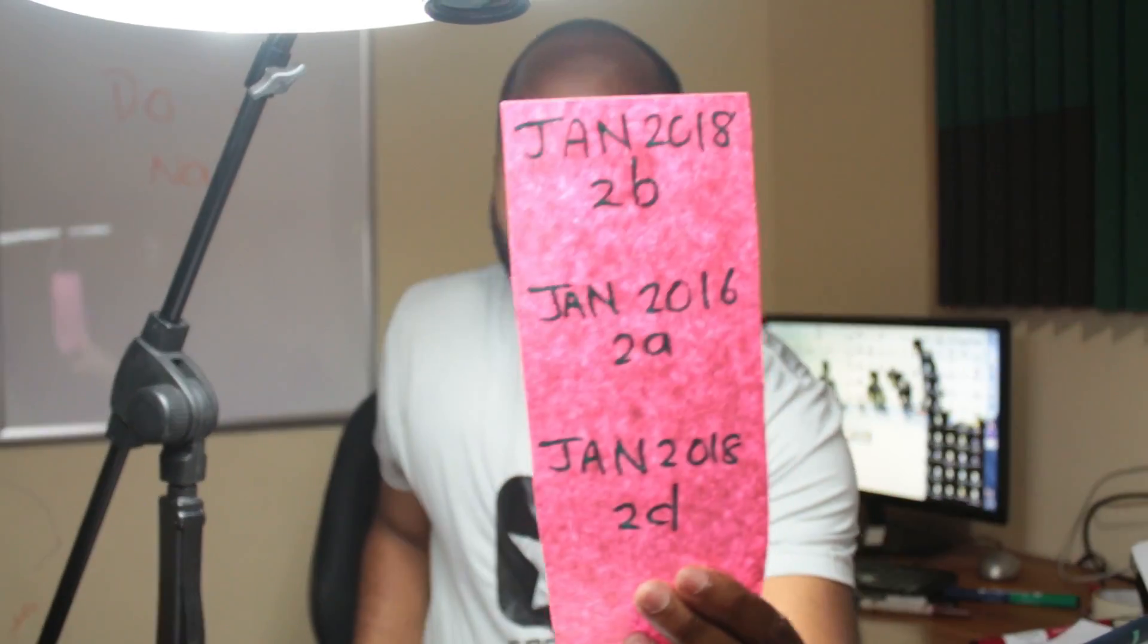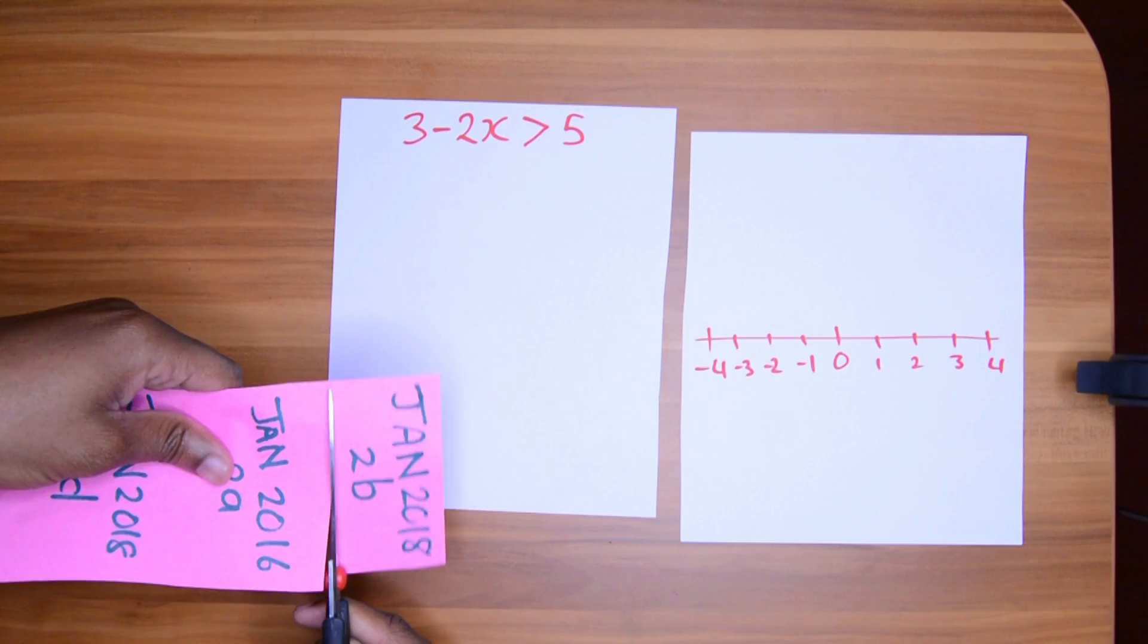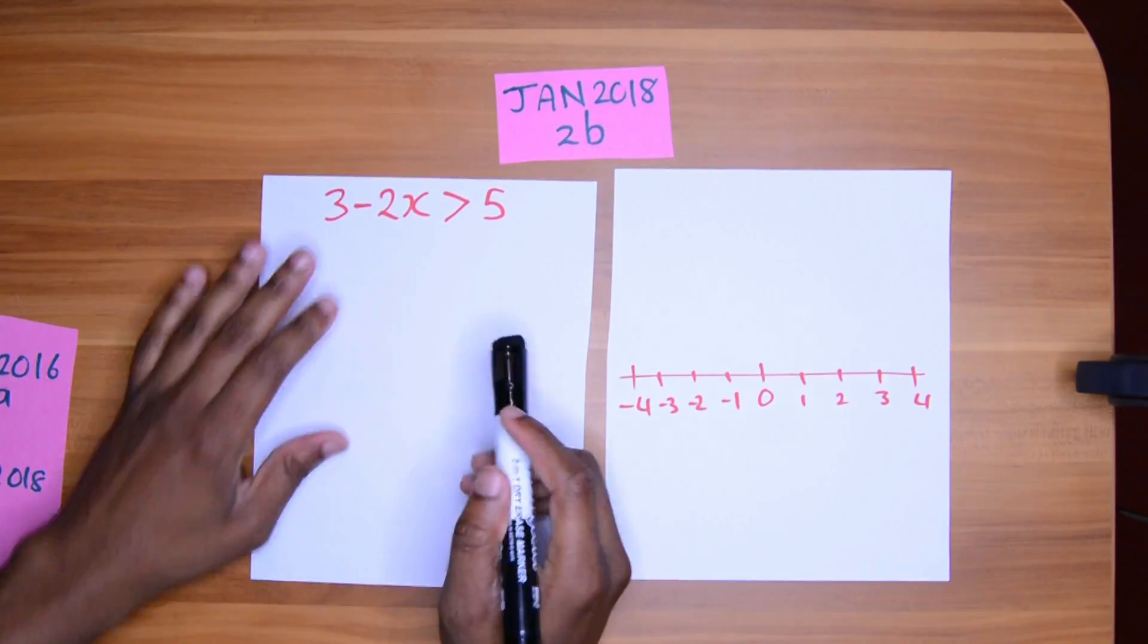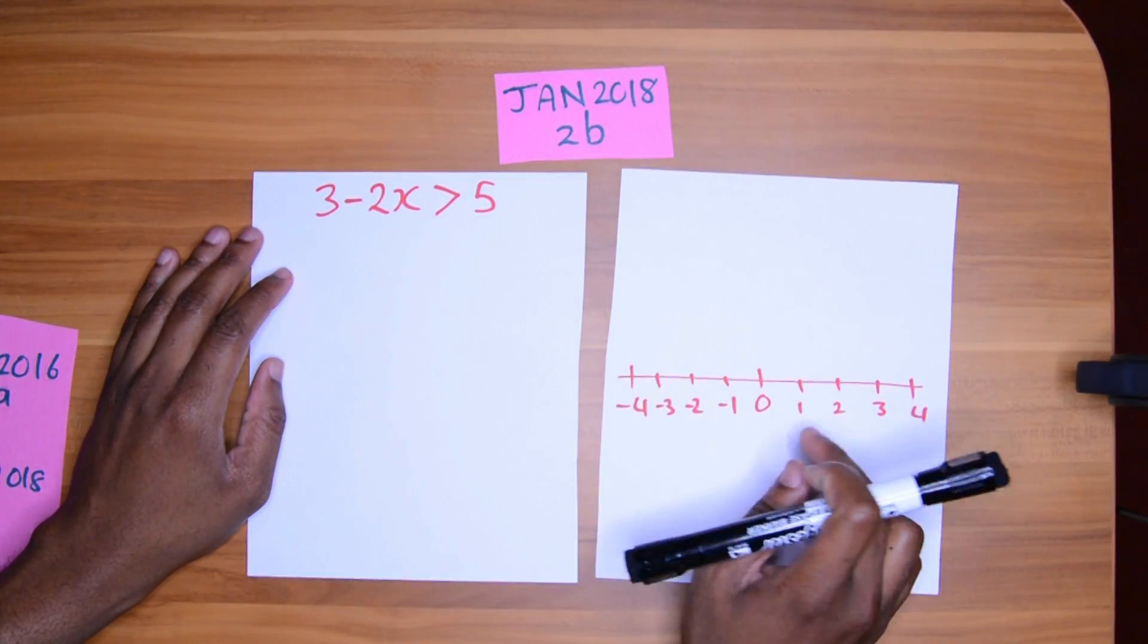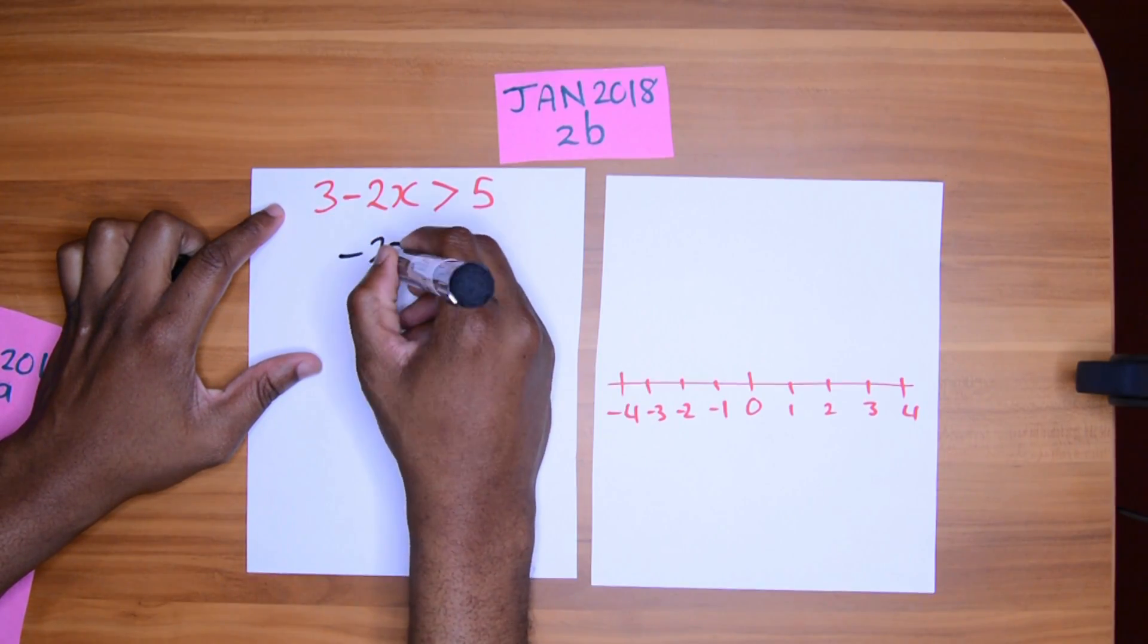All right, so let's take a look at these past paper questions for inequalities. First one we're going to look at is January 2018 part 2b. Most of the times they give you a linear equation and then when you solve it, you need to put it on a number line. The x's on the left hand side, let's keep it there. First thing you need to do is bring across that 3.